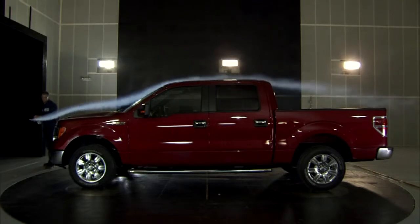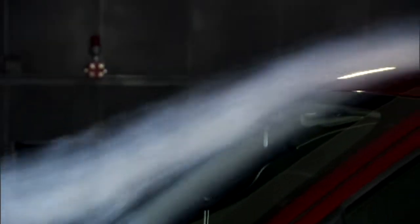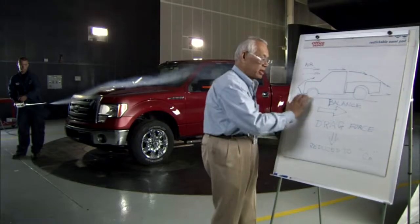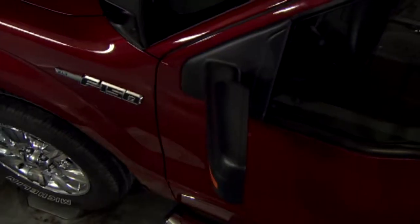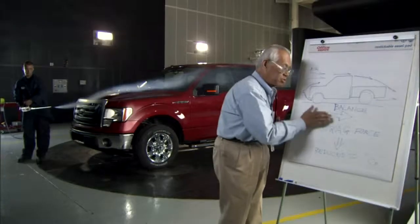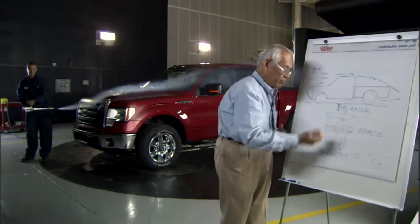We have two approaches, two methods to do our business. One is analytical — that's what we do on the computer. The other way is called the physical method, where we basically put the vehicle in the wind tunnel, measure the drag force, as we illustrate here. We put the vehicle on the balance and measure the drag force, which is the force pushing the vehicle back in the direction against the wind.